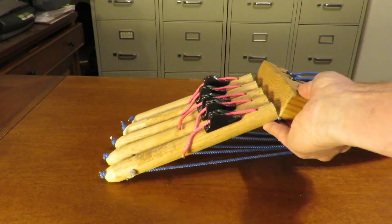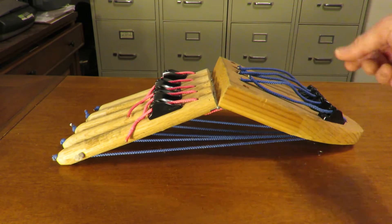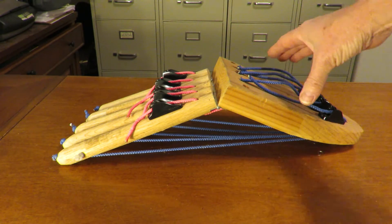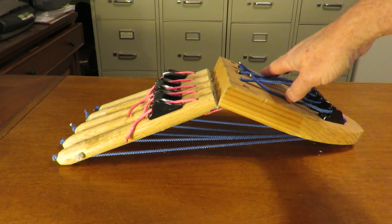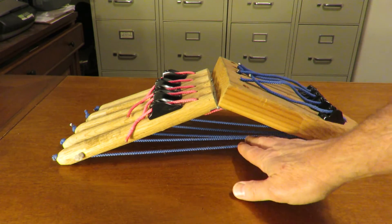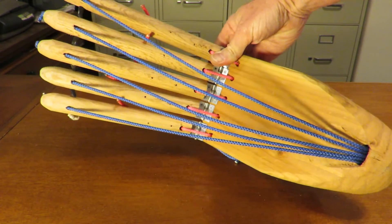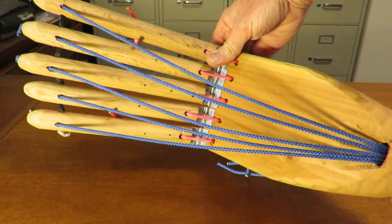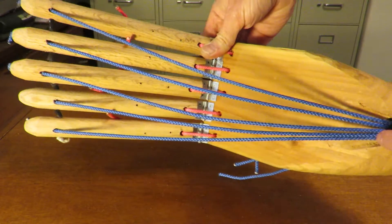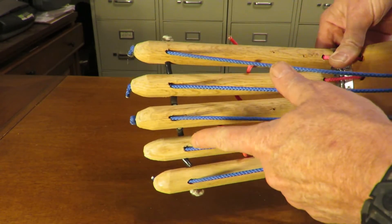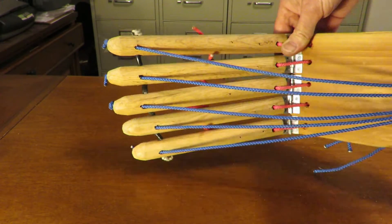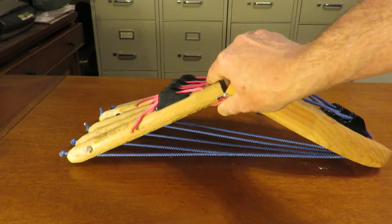Also, holding the metatarsals and the rear foot together are a number of cords. We have a set of blue cords that represent the plantar fascia. Here's the plantar fascia on the blue cords, going from the medial calcaneal tubercle to the plantar metatarsal head area.